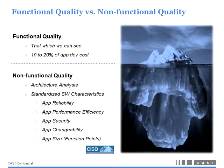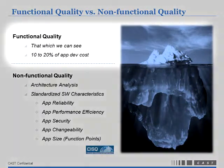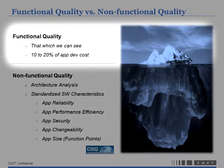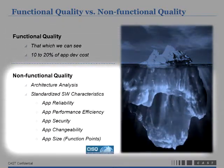Functional quality versus non-functional: functional quality is the top piece of the iceberg — the application doing what the business user wants it to do. We will not be talking about that too much today. We're going to be talking about the non-functional piece: how is it engineered to perform?